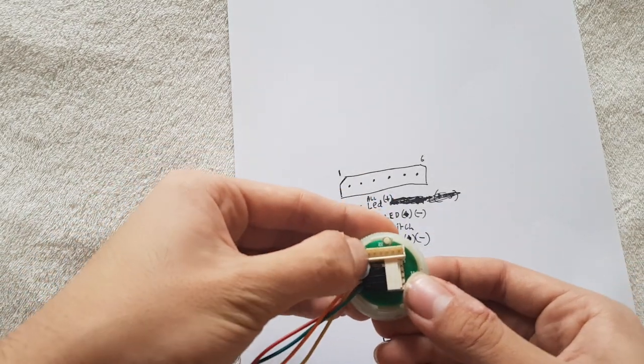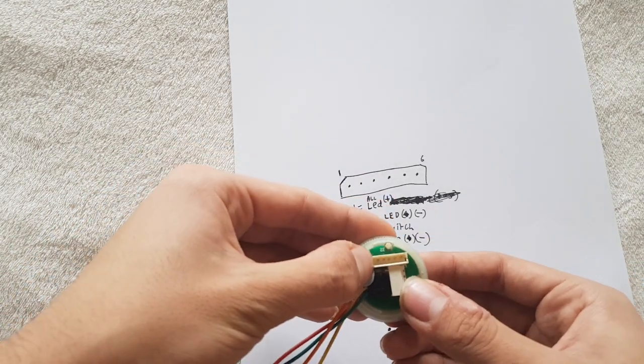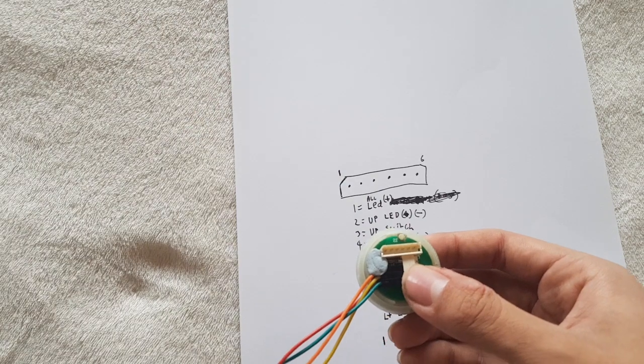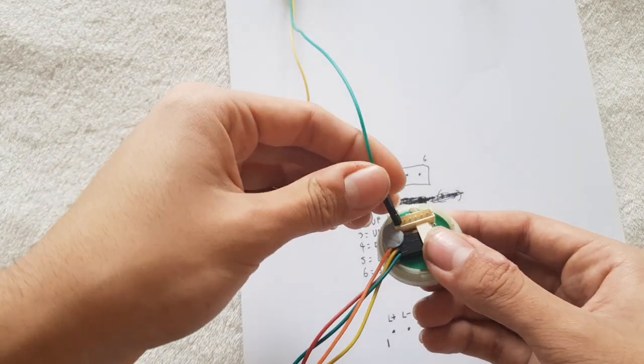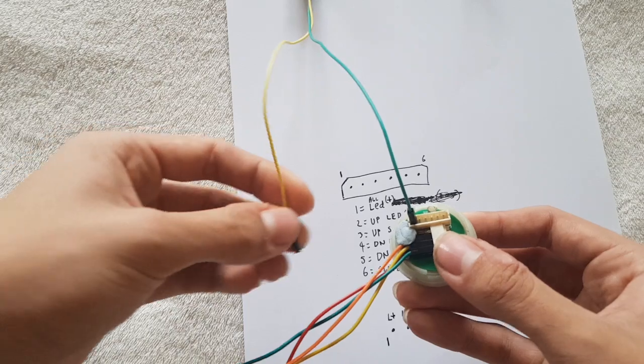The first one there is LED common, so that goes to positive on your 12-volt power supply or whatever voltage you're using. Green is positive in my case and yellow is negative.